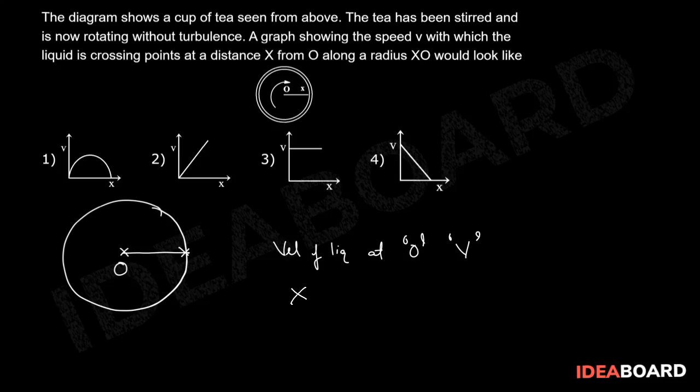As x increases, the velocity of the liquid crossing should decrease. This condition is represented in the graph of option 4, so the right answer for the given question is option 4.